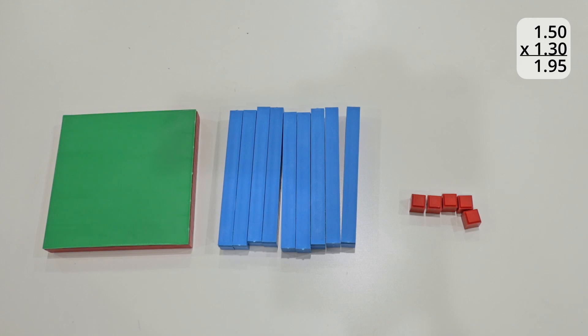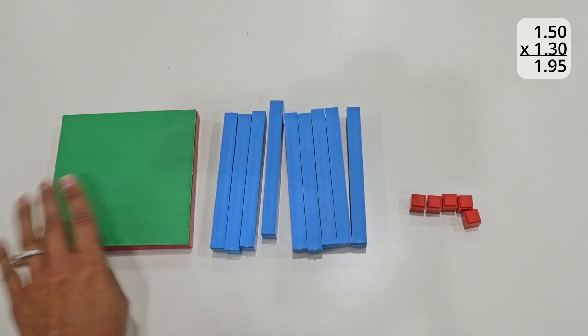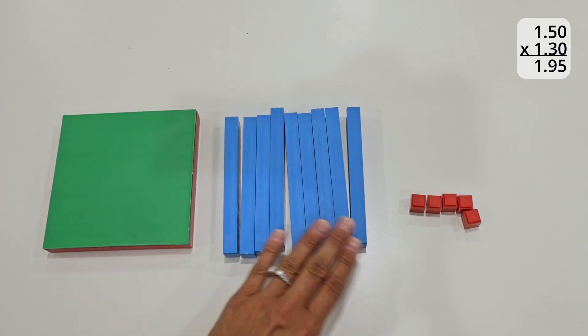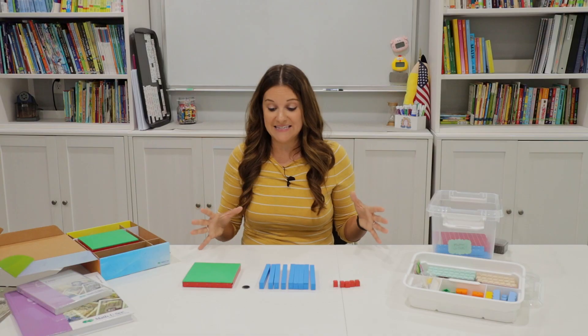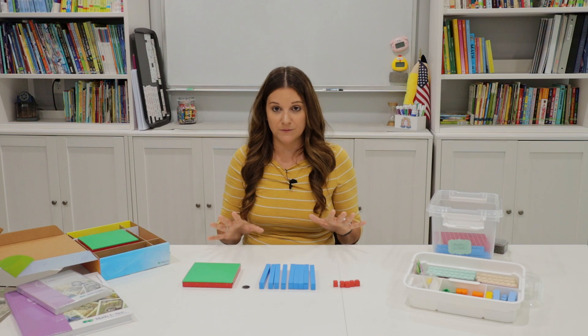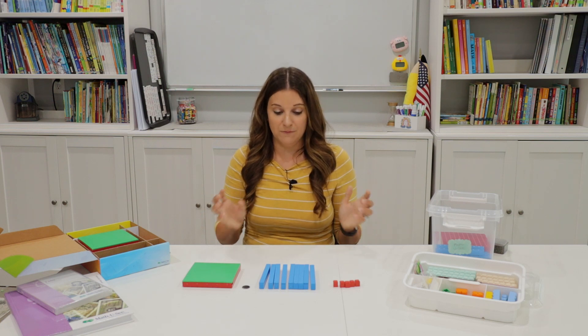So now we can bring these five back into place, and then easily we can see that 1.5 multiplied by 1.3, just by moving some blocks around, your student can get to the answer that the answer is 1.95 or $1.95. So they can see that visually after multiplying those two numbers together.